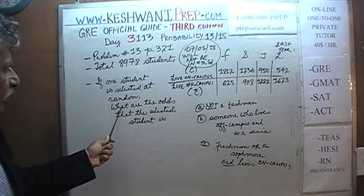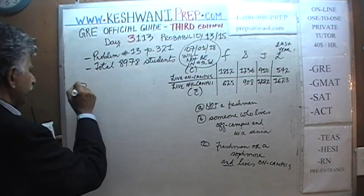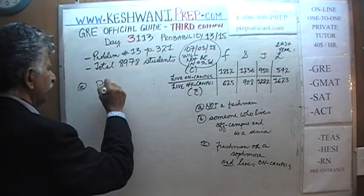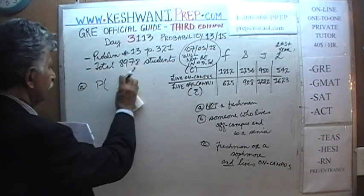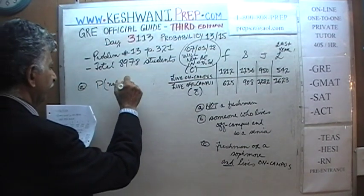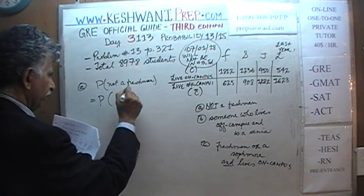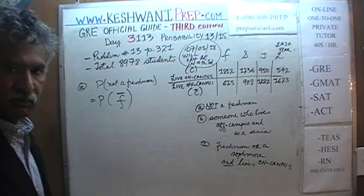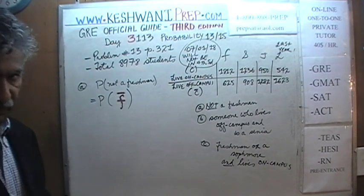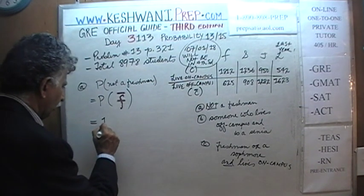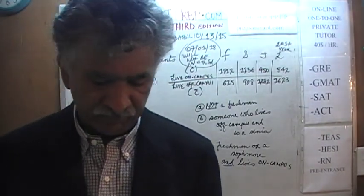Part A: probability that we select somebody who is not a freshman. In terms of symbols, we write it as P(F̄) — the bar on top is the negation. F represents people who are freshmen, and with the bar on top, somebody who is not a freshman. Which is simply going to equal 1 minus the odds of picking somebody who is a freshman. If you subtract the odds of picking a freshman, whatever is left must be the odds of picking somebody who is not a freshman.